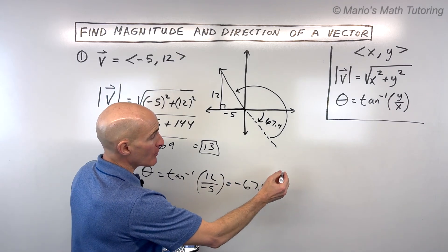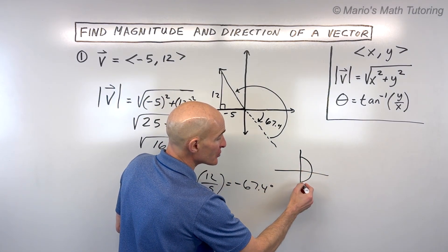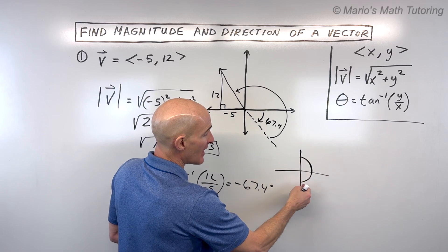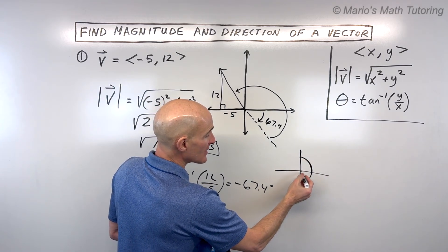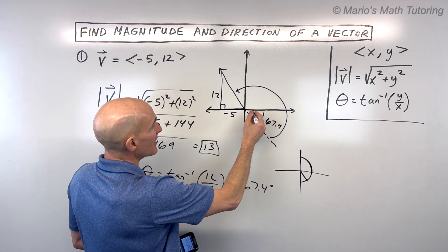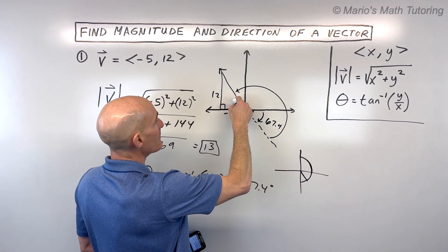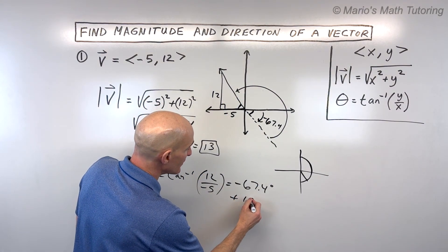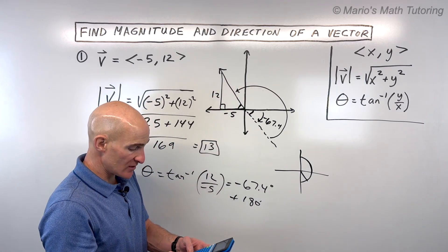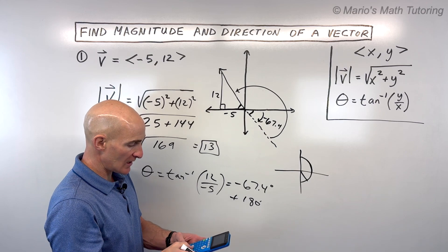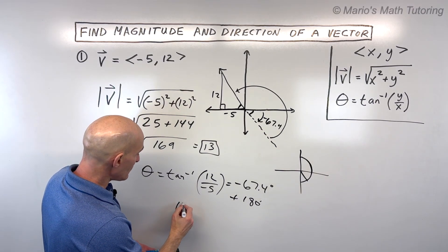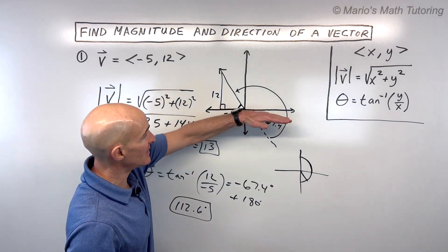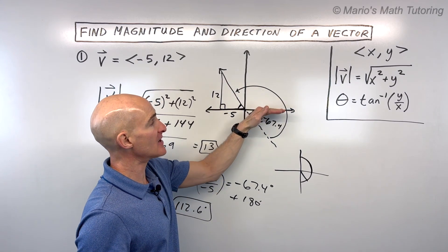Why is this giving us the wrong answer? Remember, when you learned about the unit circle and inverse trig functions, tangent inverse — so that it only gives you one output — is restricted from negative 90 to positive 90, or negative pi over 2 to positive pi over 2. That's why it's giving us this angle. This angle and the correct angle are congruent, so I'm doing 180 minus 67.4, or since it was a negative angle, I just added 180. So negative 67.4 plus 180 gives us the direction angle of 112.6 degrees, counterclockwise from the positive x-axis.